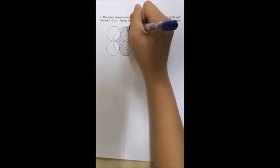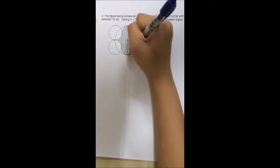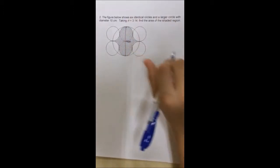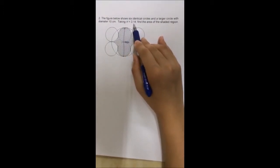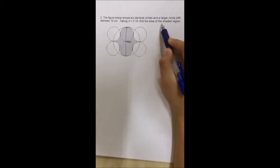The diameter is from here to here and it is 10 cm. Taking pi which is equal to 3.4, then find the area of the shaded region.